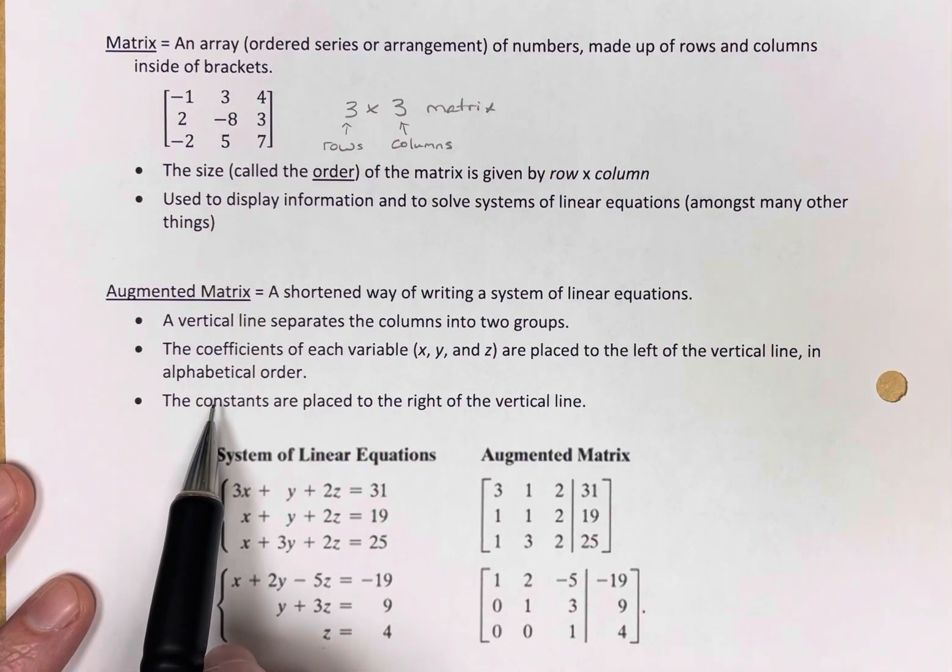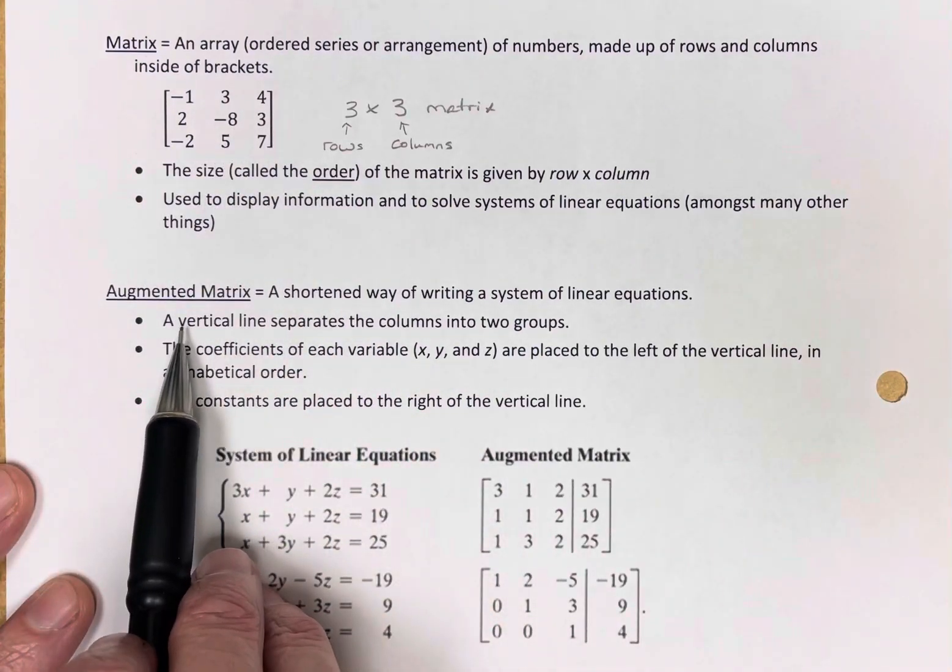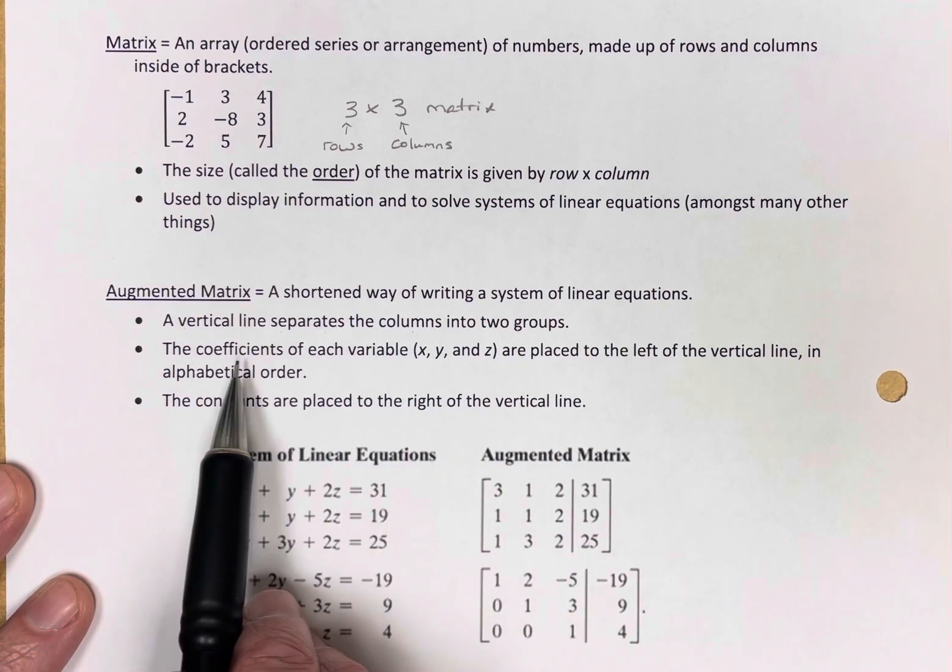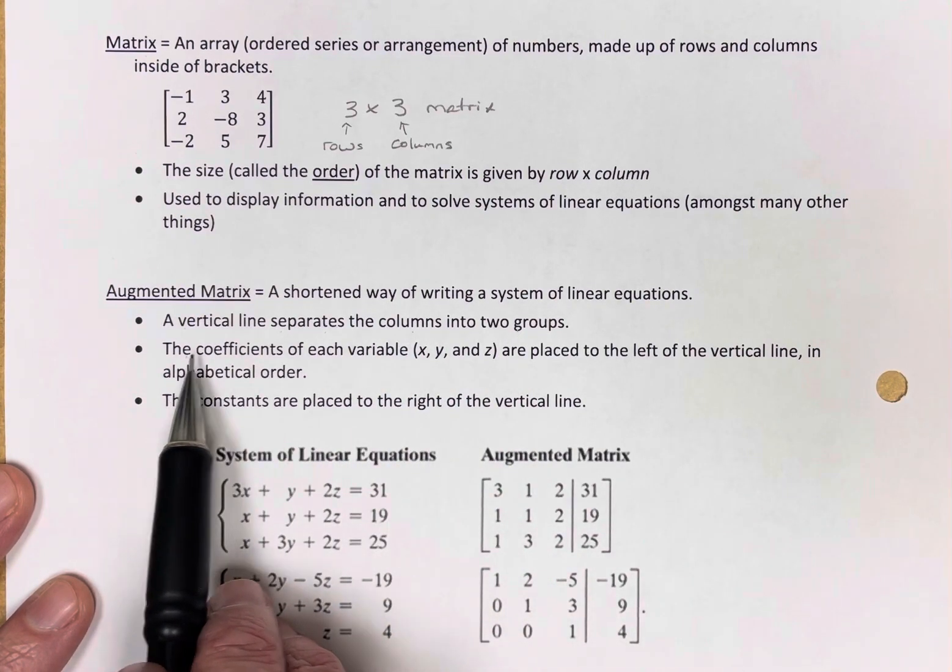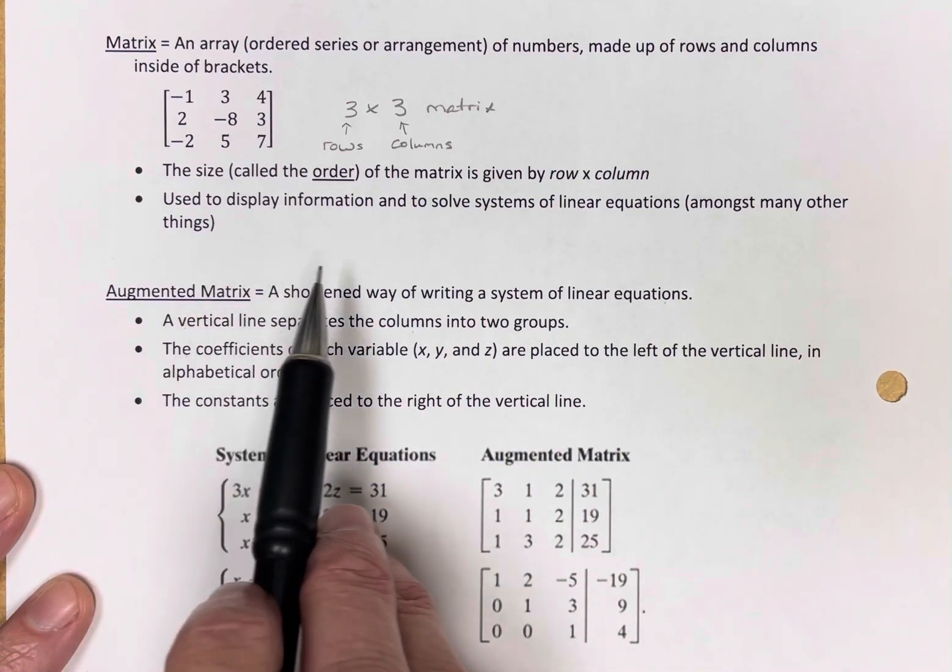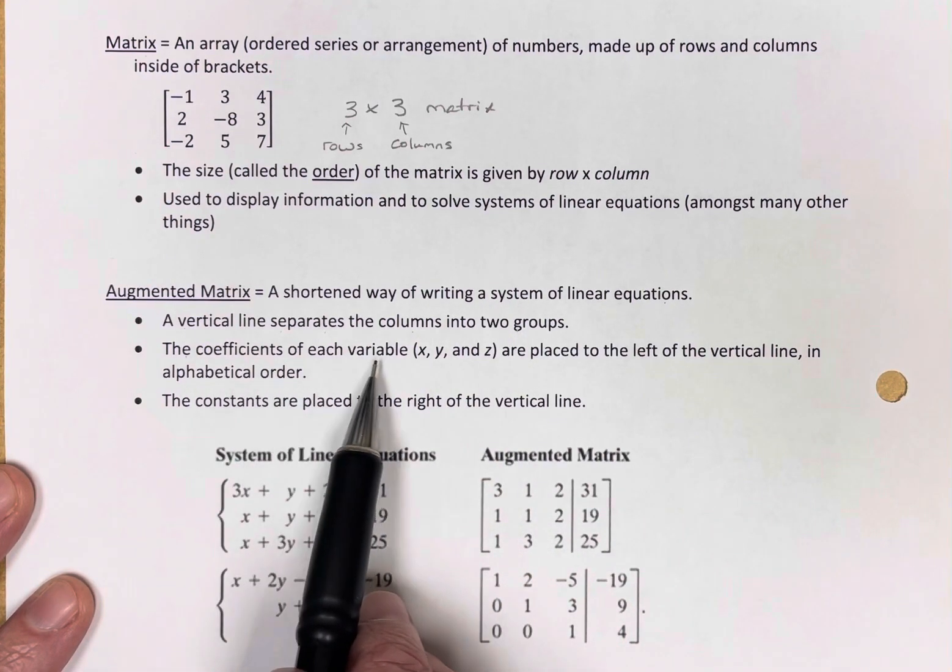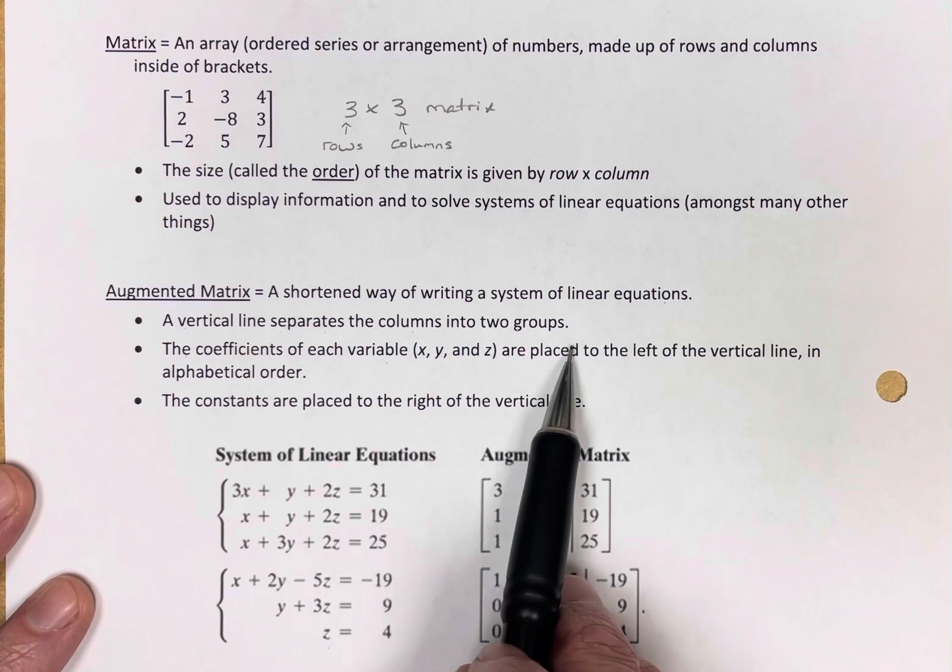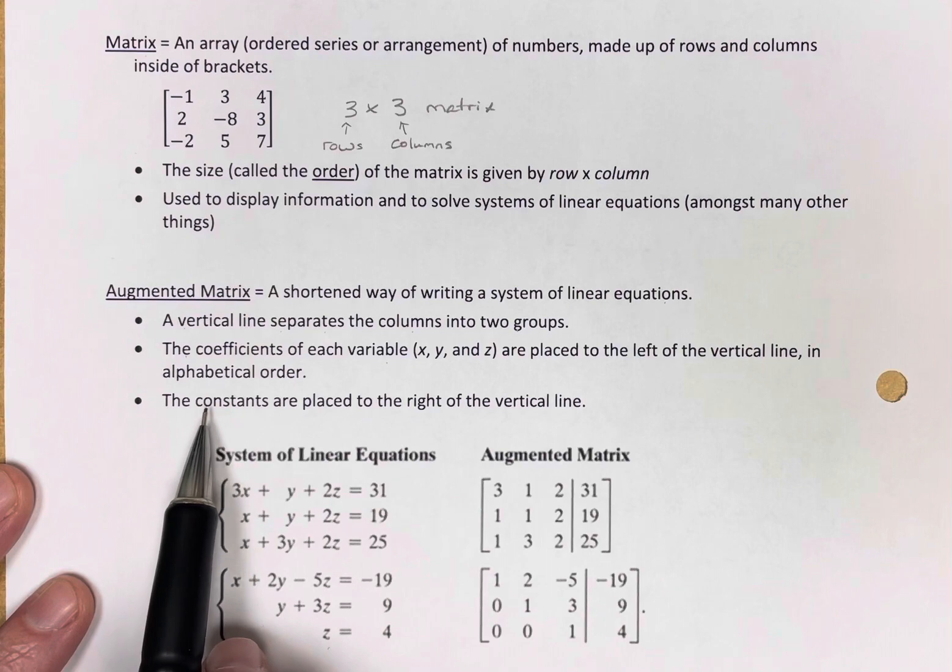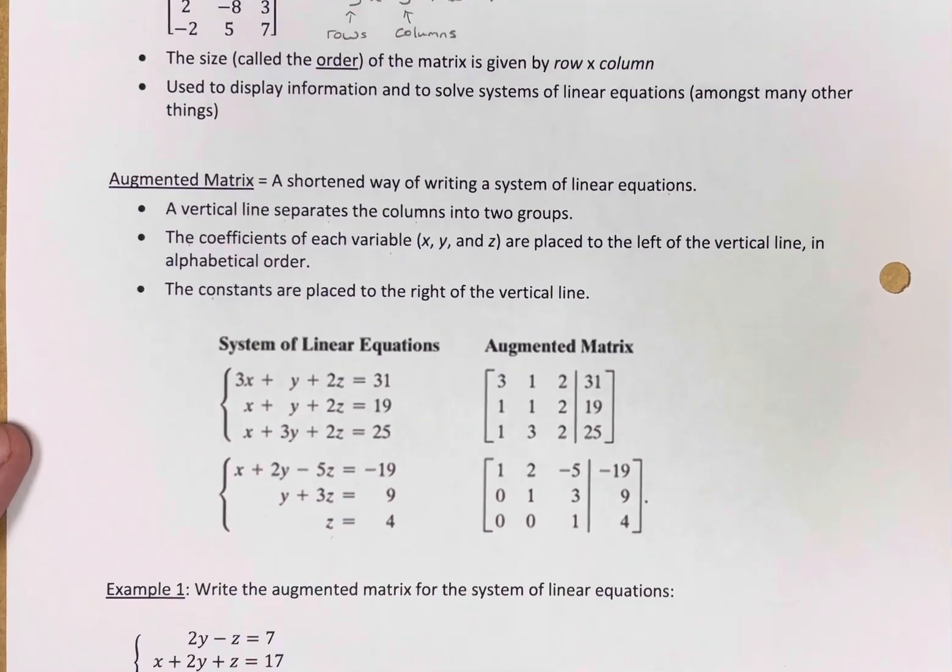How is it put together? It's a matrix, so it's going to have brackets and rows and columns. We'll have a vertical line that separates the columns into two groups. The coefficients of the variables are placed to the left of the vertical line, in alphabetical order. The constants are placed to the right of the vertical line.